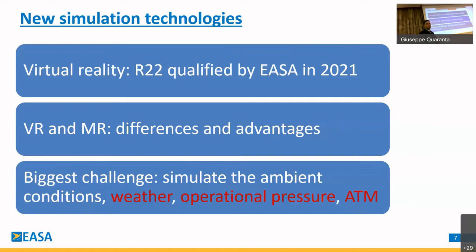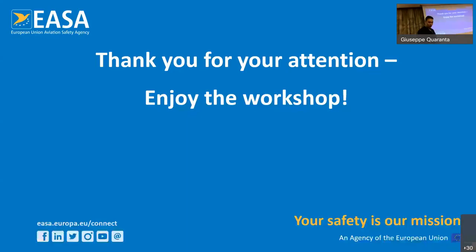The biggest challenge I see is how to simulate ambient conditions — this applies both on the certification and training side. On the certification side, we developed the modified handling qualities rating method, but we are still missing a standard model of ambient conditions. There are some studies being done, but we need a standard we can all agree on. On the training side, since eVTOLs are expected to be easier to fly than conventional rotorcraft, training will probably be more focused on scenario handling — how to handle operations and contingencies — rather than pure aircraft handling.